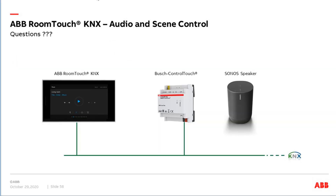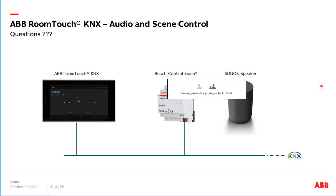That concludes the presentation. I would like to say thank you for listening and hand back to Thorsten. Thank you Jürgen, great. Two powerful functions inside the ABB RoomTouch KNX — Audio Control and Scene. Many customers have Sonos speakers, so now there's a further option to operate them via a KNX device. You can still also operate via the mobile app of the Bush Control Touch, of course.